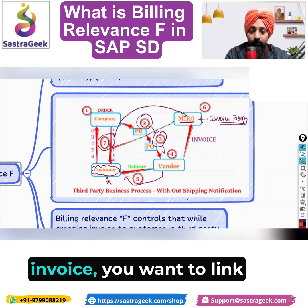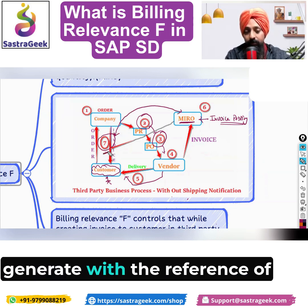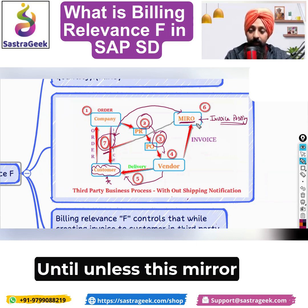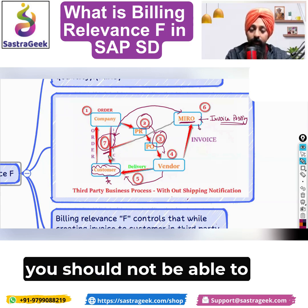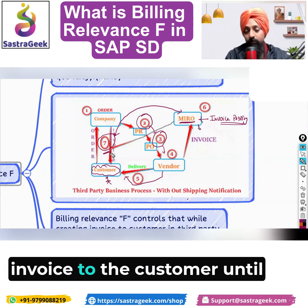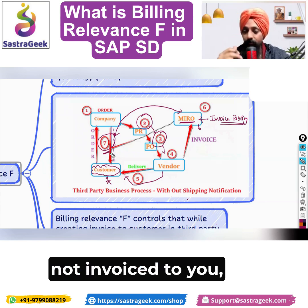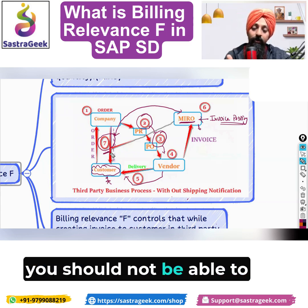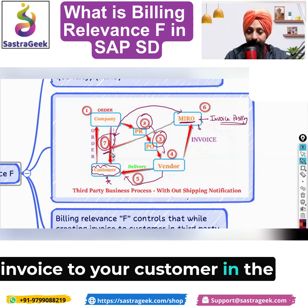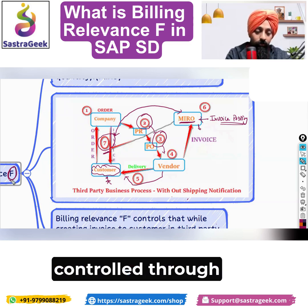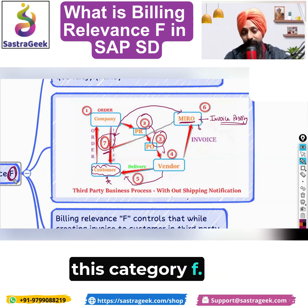If you want to link the customer invoice with the vendor invoice — you want to generate the customer invoice with reference to the vendor invoice — then until and unless the MIRO is not done, you should not be able to invoice the customer. Until your vendor has not invoiced you, you should not be able to invoice your customer in the third-party process. That is controlled through billing relevance category F.